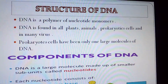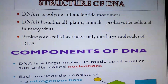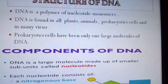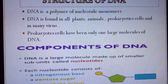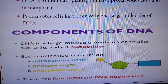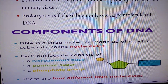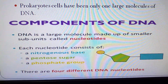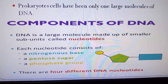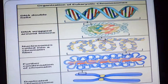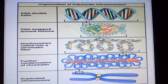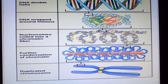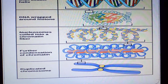Next is the structure of DNA. DNA is a polymer of nucleotide monomers and is found in all plants, animals, prokaryotic cells, and many viruses. Prokaryotic cells have only one large molecule of DNA. DNA components include: each nucleotide consists of a nitrogen base, pentose sugar, and a phosphate group — there are four different DNA nucleotides. The organization of a eukaryotic chromosome goes from DNA double helix, DNA wrapped around histone nucleosomes, coiled into chromatin fiber, and further condensed into a duplicate chromosome.